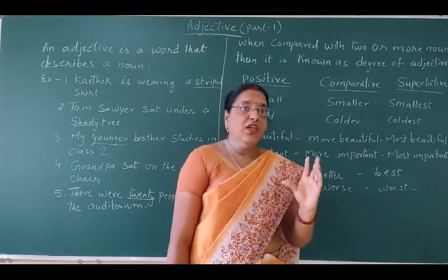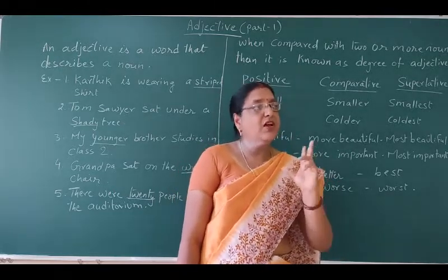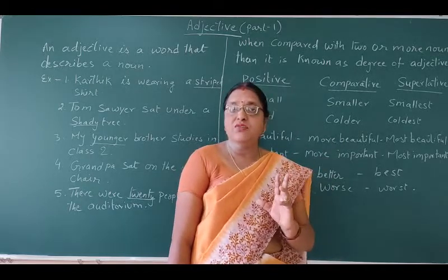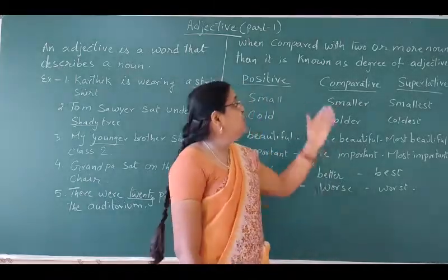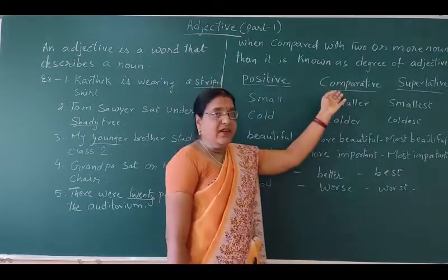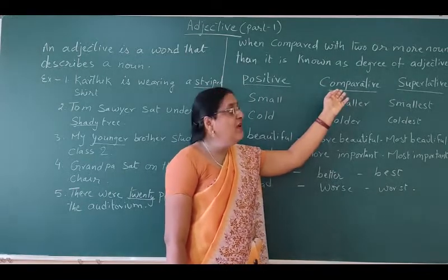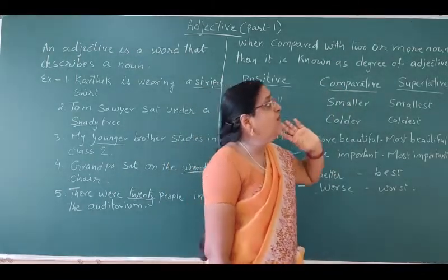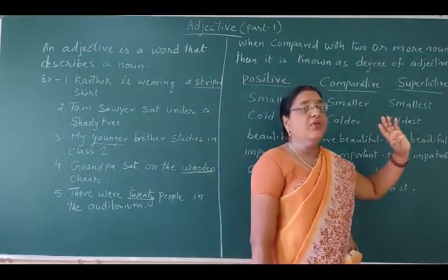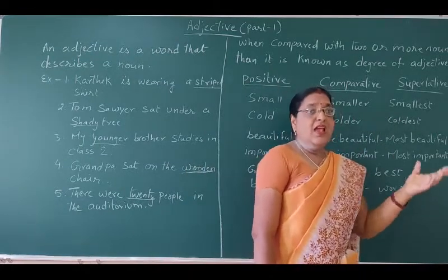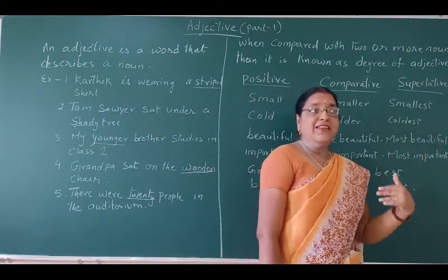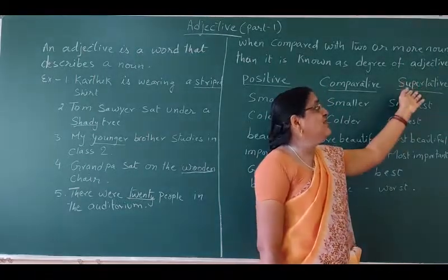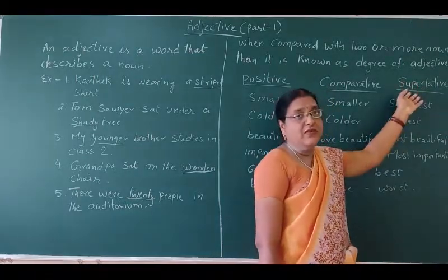When you are talking about two nouns, when you are comparing the quality of two nouns, then you are talking about comparative degree. And whenever you are talking about more than two nouns and you are selecting the best out of that, that is the supernative degree.